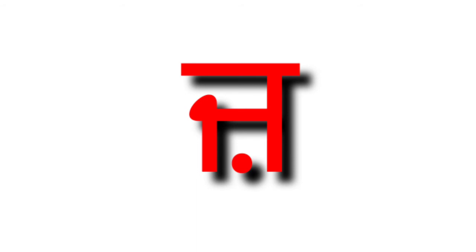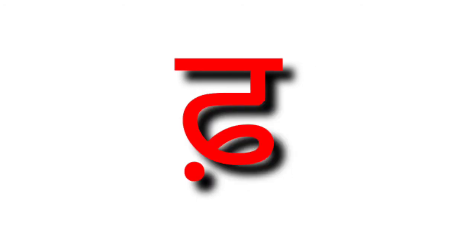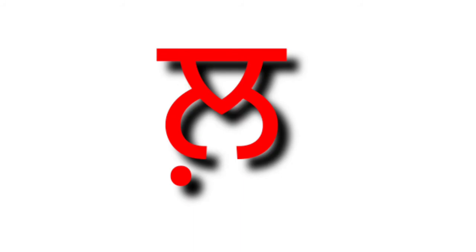If there is a small dot below the Punjabi letter Fha, it is pronounced as Fha. If there is a small dot below the Punjabi letter Lla, it is pronounced as La.